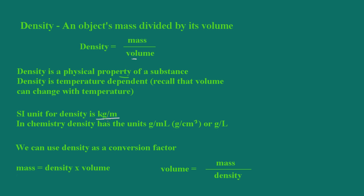The SI unit for density is the kilogram per meter, but in chemistry we usually use units of grams per milliliter or grams per liter. Also note that we have grams per cubic centimeter — remember, a milliliter is equal to a cubic centimeter. We can also use density as a conversion factor, and we'll be doing some of that a little bit later.